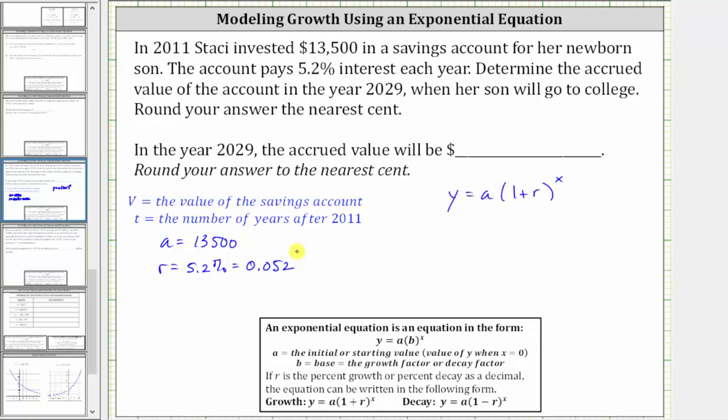Which means the equation that models the value of this account is v equals 13,500 times the quantity one plus 0.052 raised to the power of t. Again, we're using the variables t and v, not x and y. Simplifying, we have v equals 13,500 times 1.052 raised to the power of t.